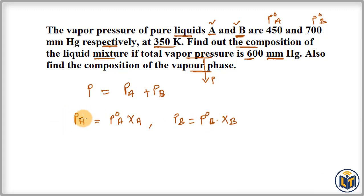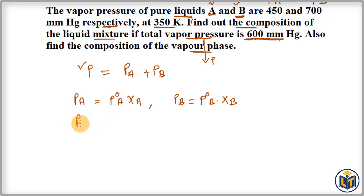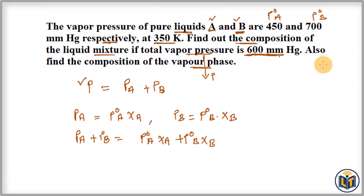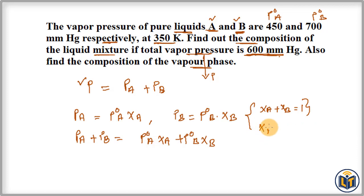When we add the vapor pressures of each component in the solution, it equals 600 mmHg — the total vapor pressure of the solution. We also know that the total mole fraction of all components equals 1, so XA + XB = 1, which gives us XB = 1 − XA.